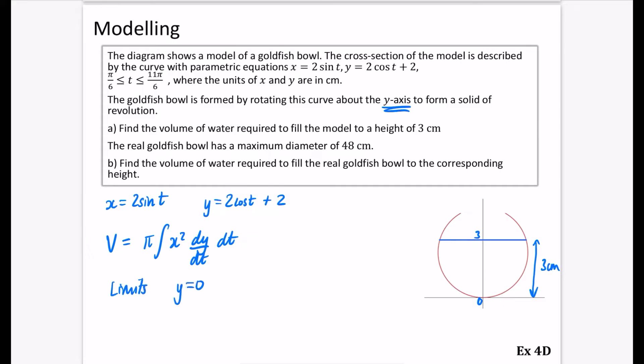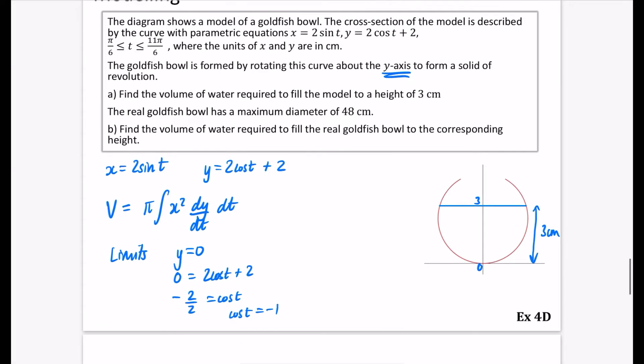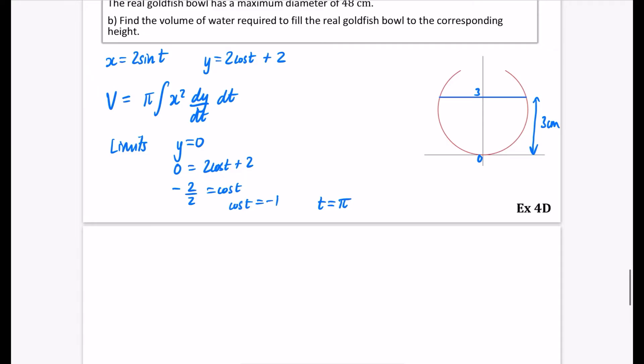If y is equal to 0, we would get 0 = 2cos(t) + 2. So that is -2/2 = cos(t). In other words, cos(t) is -1. Now, cos is equal to -1 when t is equal to π. So we now know that the bottom limit is going to be π. So I might just do down here, this reminds me the bottom one is going to be π. Now, when y is equal to 3, because this is the y-axis here, we're just wanting to rotate this part of the curve.